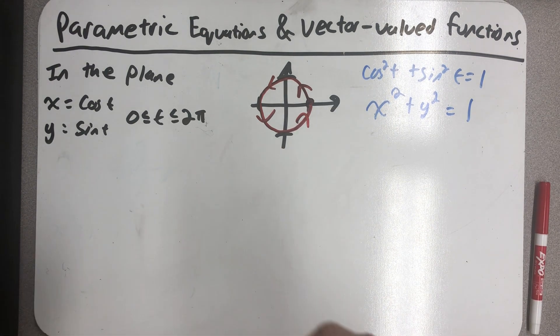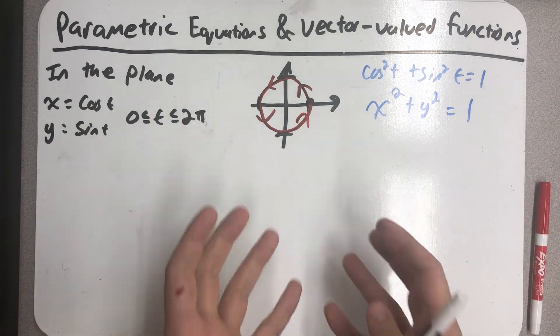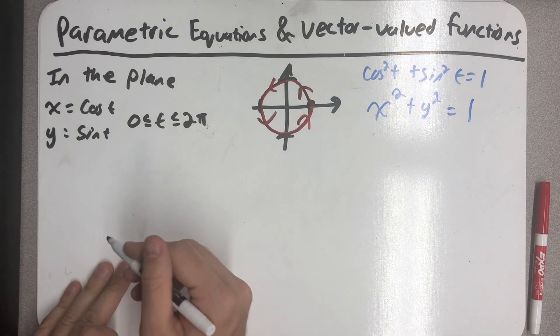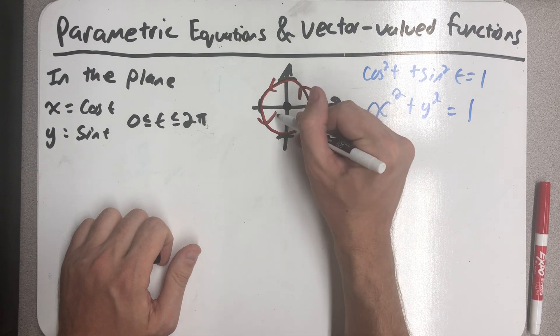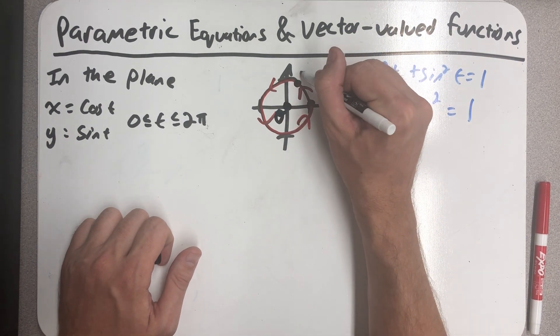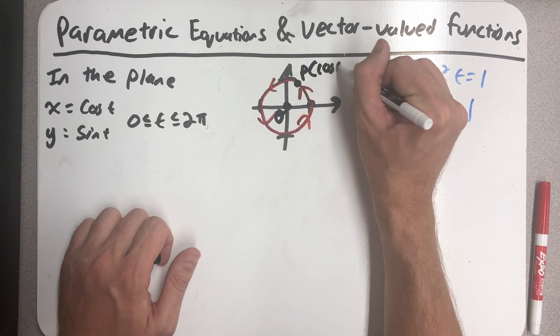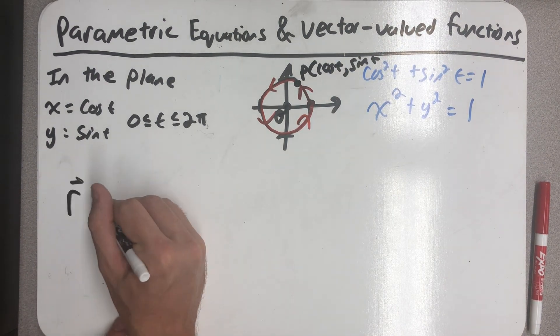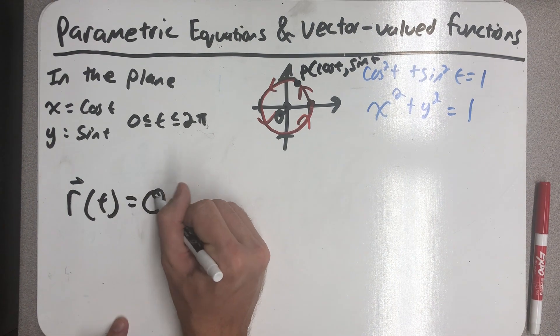Okay, so parametric equations generate a plane curve. Now I want to consider a vector. I want to consider the vector that points from the point O, the origin, to any point P on that curve. So I'm going to call that vector R. So R is the vector OP.